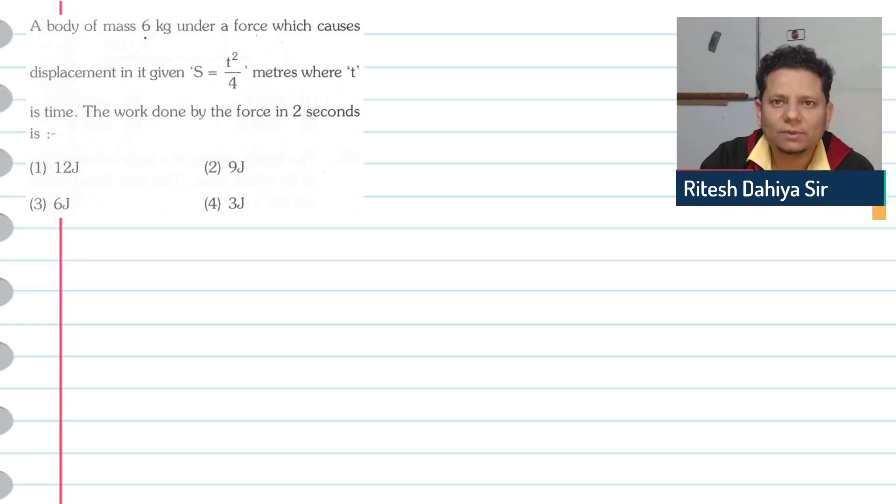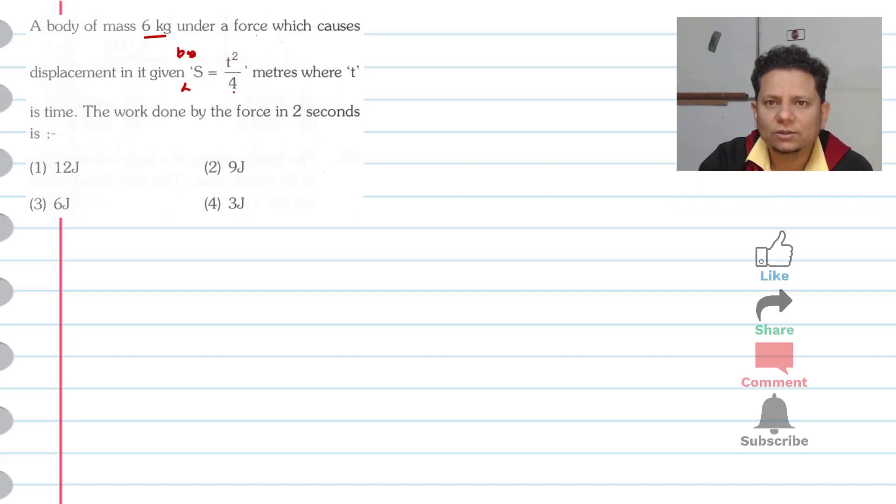Next question. A body of mass 6 kg under a force which causes displacement given by s equals t squared by 4 meters, where t is time. The work done by the force in 2 seconds will be: option 1, 12 joule; option 2, 9 joule; option 3, 6 joule; or option 4, 3 joule. Now, the s value is t squared by 4.